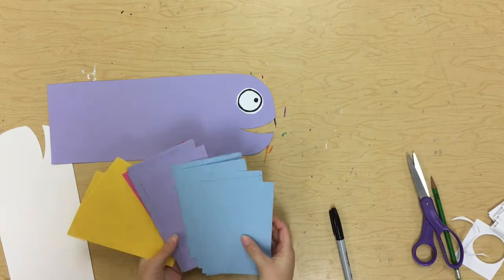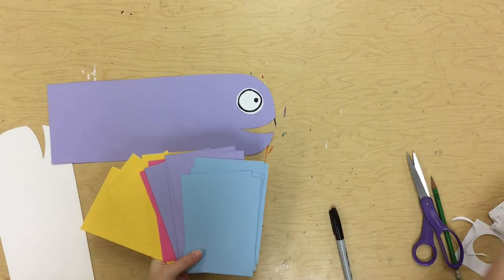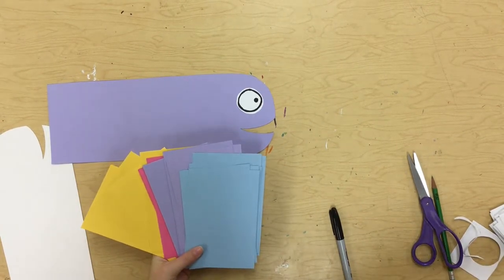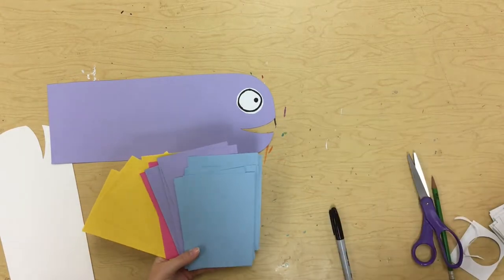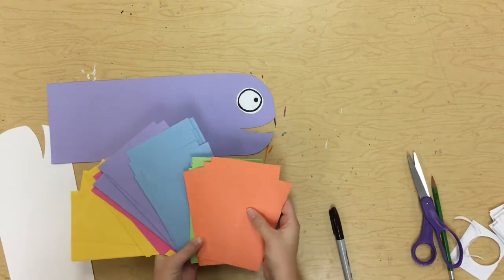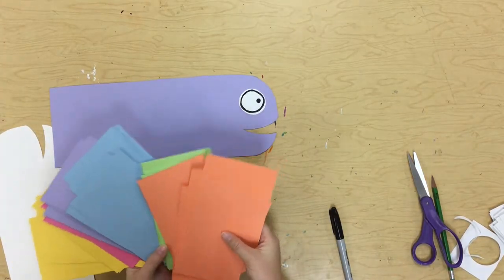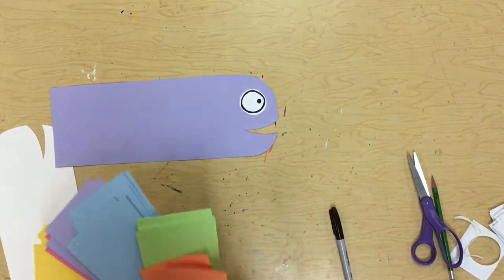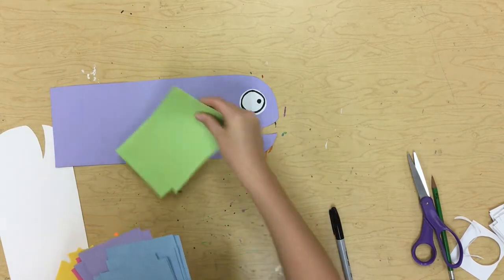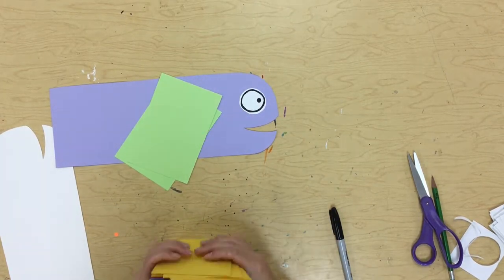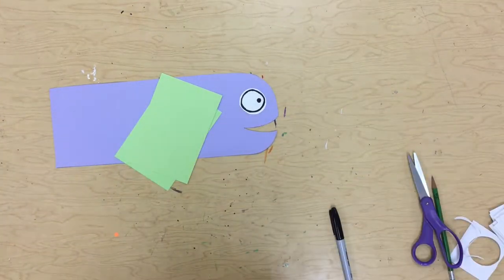Next, you're going to pick the color that you want for your fins for your fish. I'm looking at all the colors. I'm kind of going to hold some of them up so I can see. Does this color look good? Ooh, green. Okay, I'll go with green. I'm going to pick two out because we're going to make two fins for our fish.